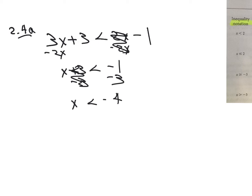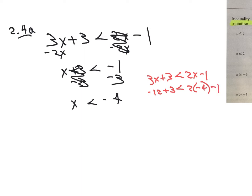So that means when we have our original equation — let's put it back up here — whenever we put negative 4 in for x on both sides, let's try it: 3 times negative 4 is negative 12 plus 3 is less than 2 times negative 4 minus 1. Negative 12 plus 3 is negative 9; is that less than negative 8 minus 1, which is negative 9? Is that a true statement?